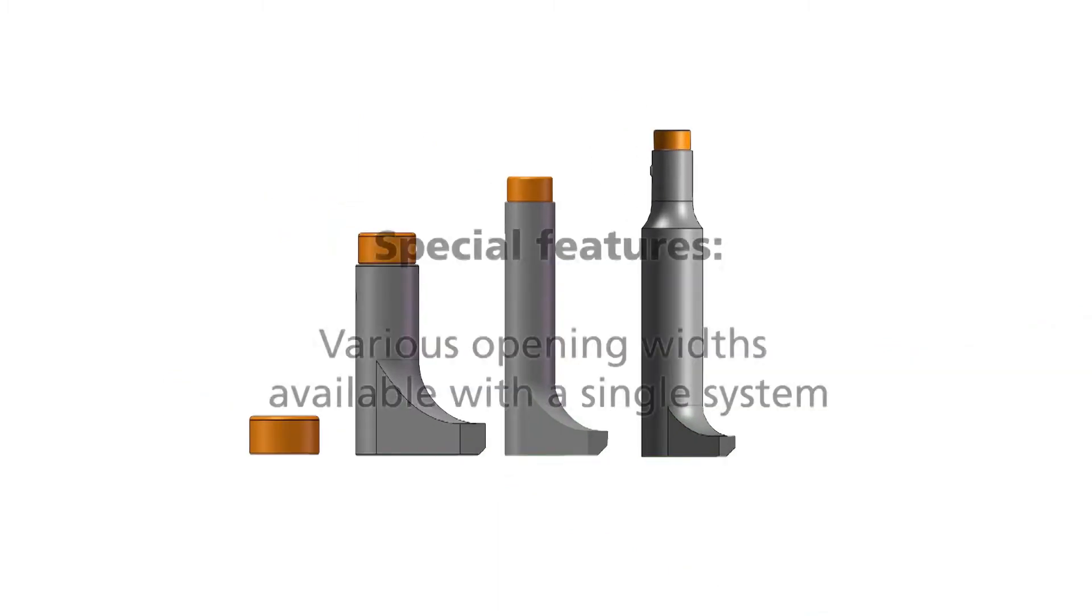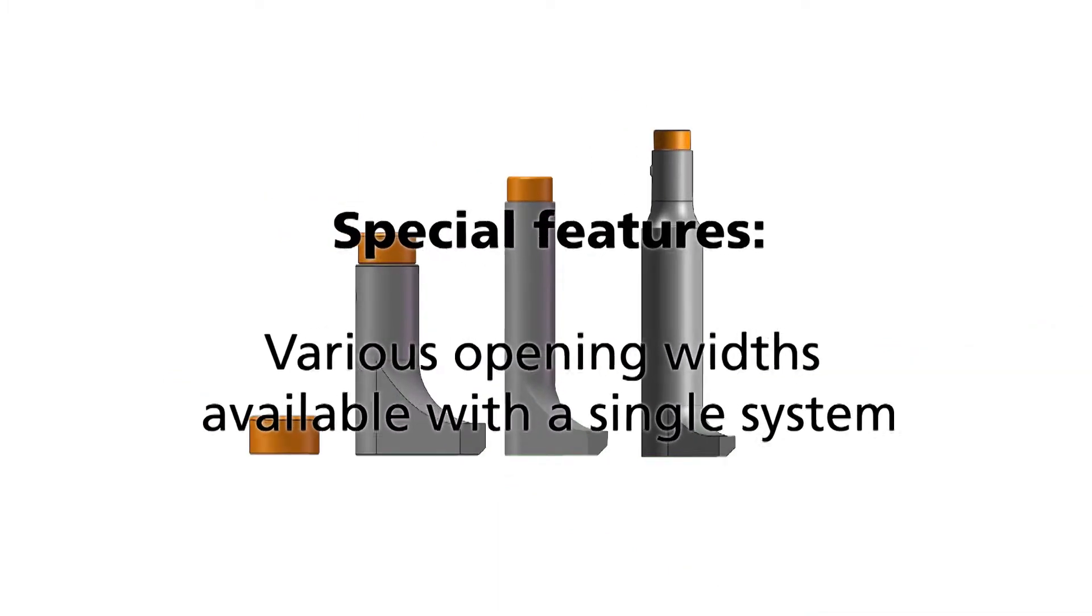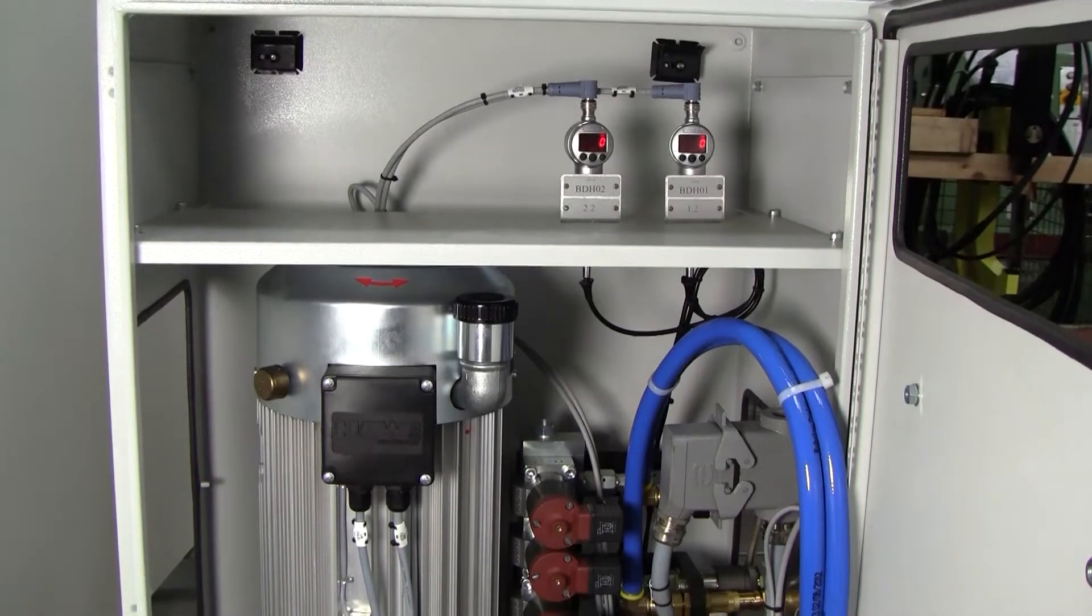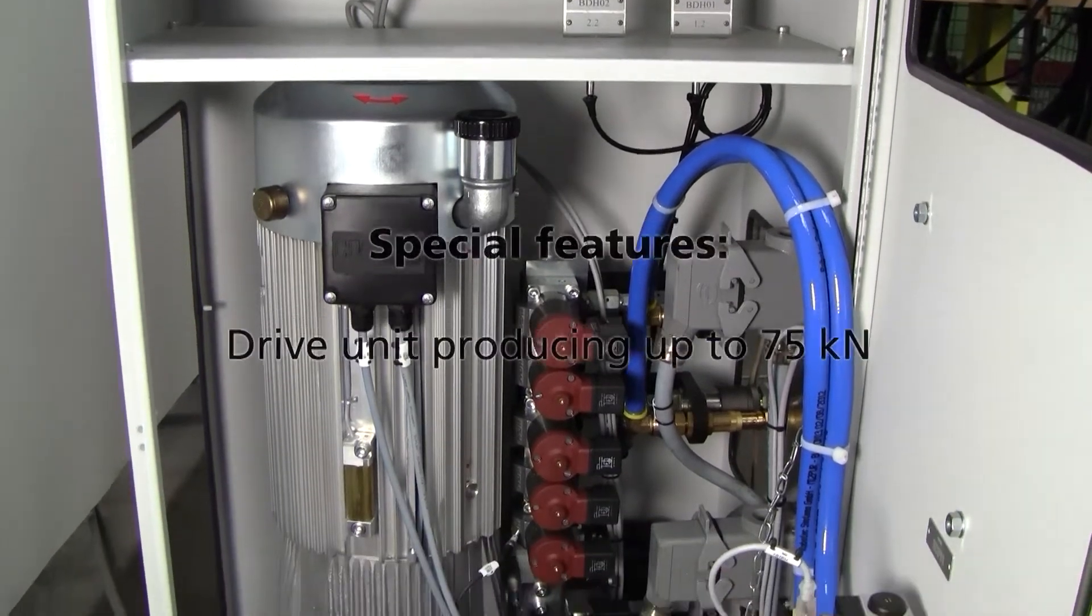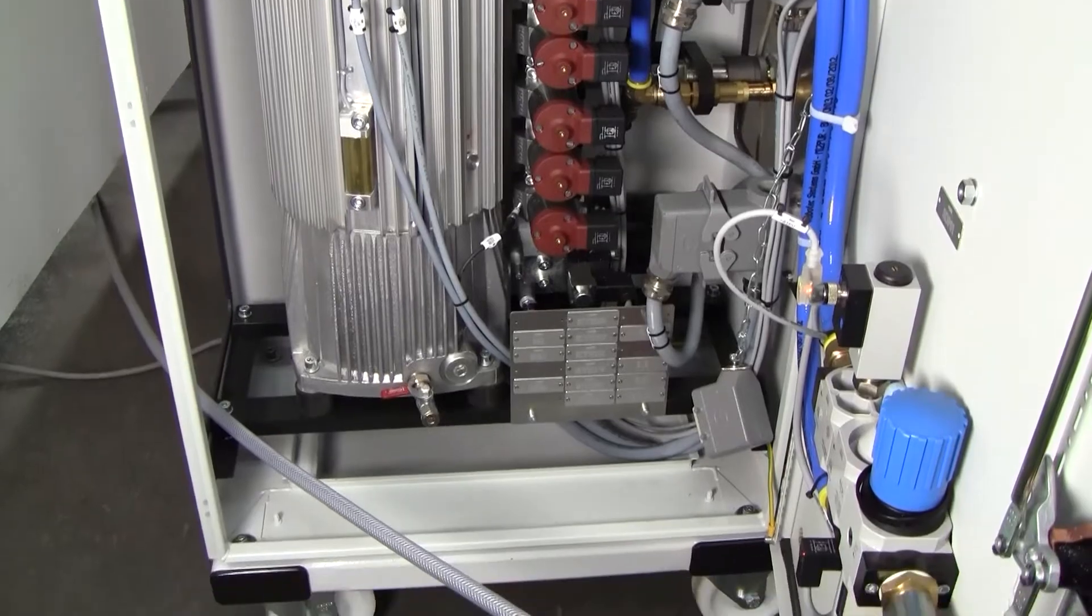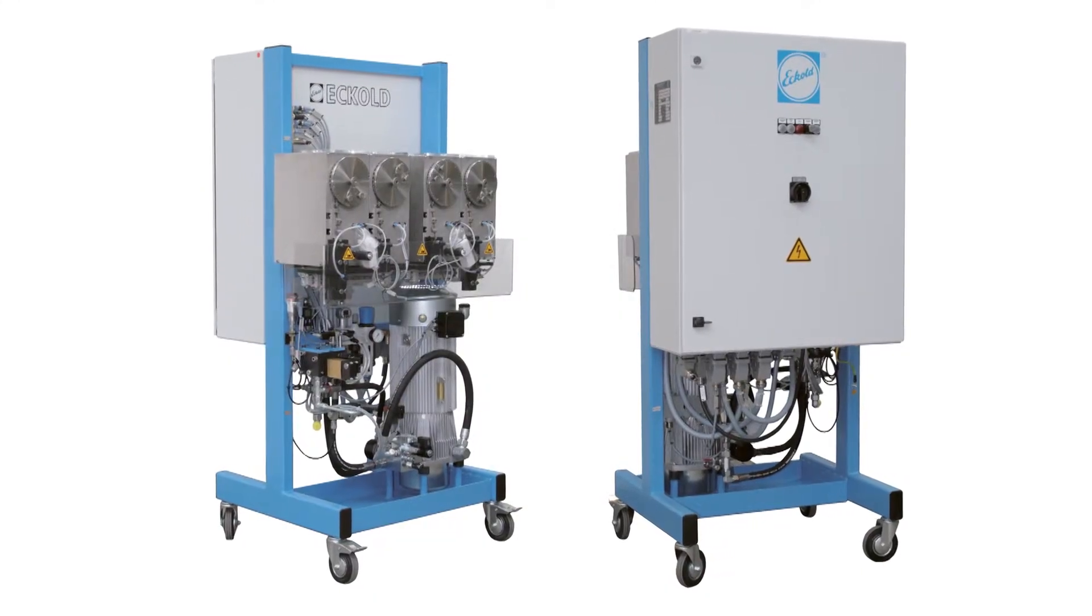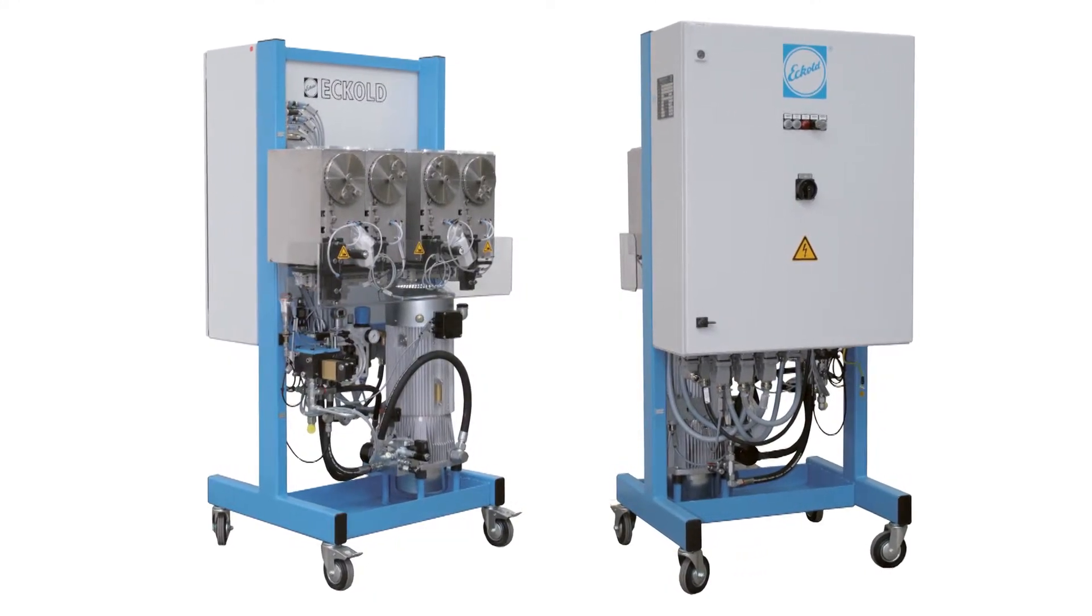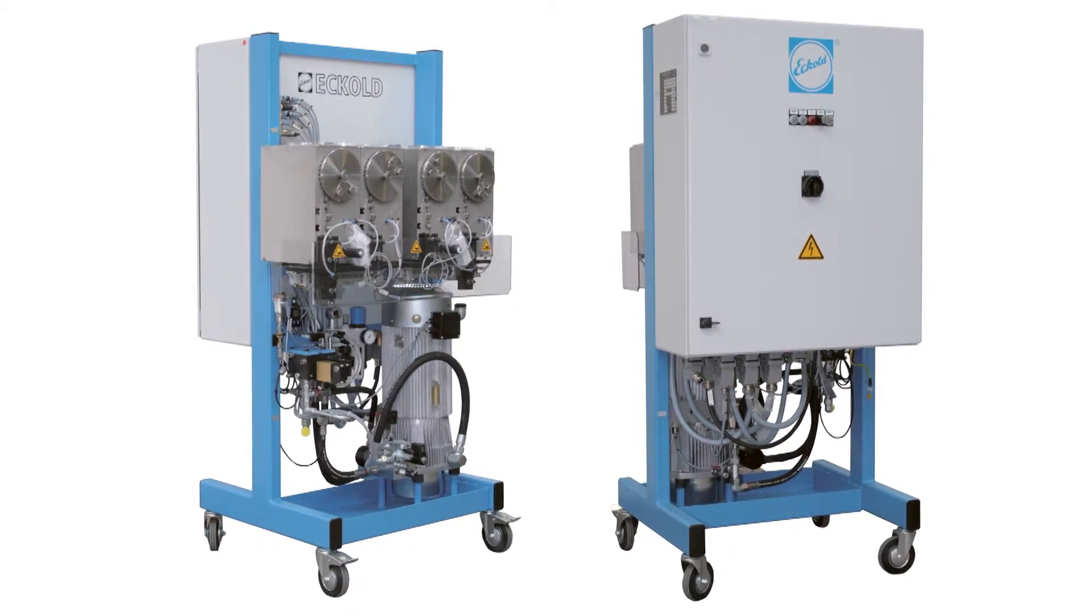The system allows for various opening widths. The drive units provide up to 75 kN, which is well above the standard 50 kN generally used for self-piercing riveting. Thanks to this margin, it is possible to process stronger sheet metal should the need arise.